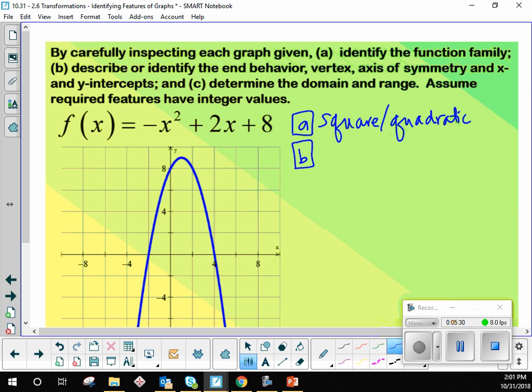Part B described or identified the end behavior. We said that it was down, down, just like the Led Zeppelin song. The vertex is what here? Notice the lines are skipping by two. So what would you say the vertex is? One, nine? Absolutely. Okay, the vertex is right here. The axis of symmetry always goes through the x-coordinate of the vertex. So what is the axis of symmetry? x equals one, right? Not just one, but x equals one.